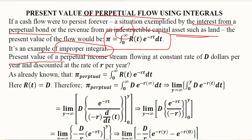Present value of the perpetual income stream flowing at constant rate D dollars per year discounted at r per year is calculated here. You can see in the subscript of π we have written perpetual because it is something likely to last for an undefined period of time.